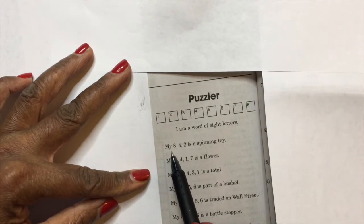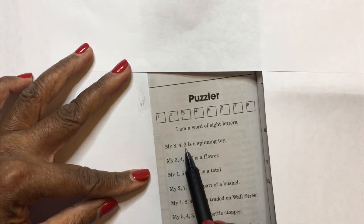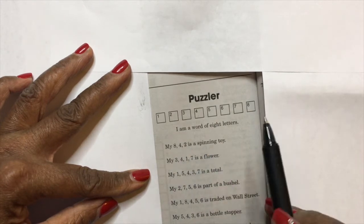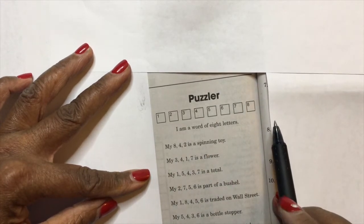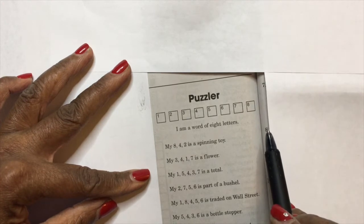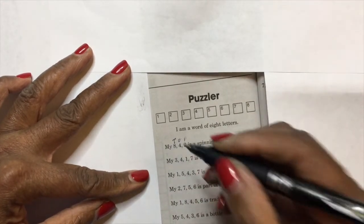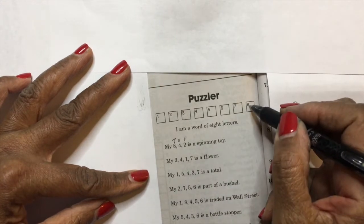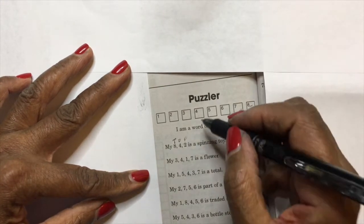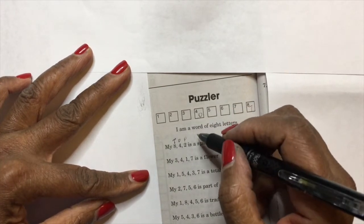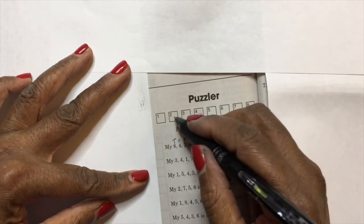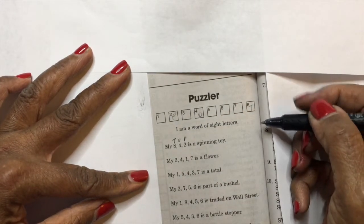says 'my eight, my four, my two is a spinning toy.' So what comes to mind? The word 'top.' So I'm going to put T-O-P. That means eight is going to be a T, four is going to be an O, and two is going to be a P. I don't know if this is correct yet,